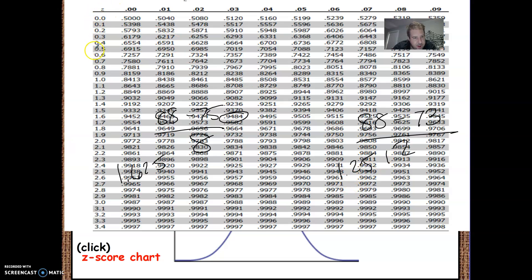So 1.63 would be right here. So they beat about 95% of the people. 1.25, so you go 1.2 and then go over to 5. 1.25 beat about 89% of the class. So I'd rather beat 95% of the class than 89% of the class. So this is called a Z table chart, and this helps you turn a Z score into an actual percentile.